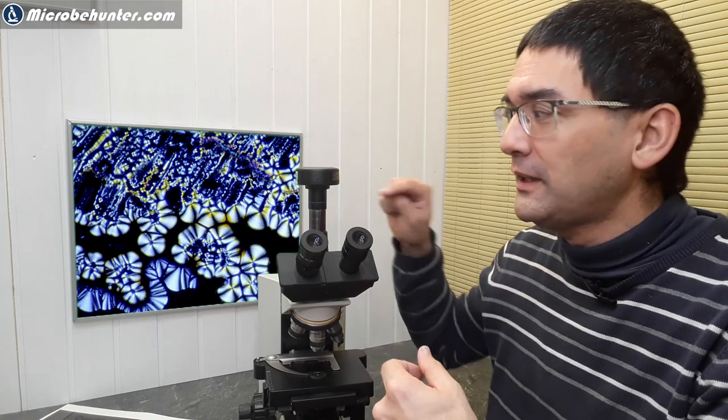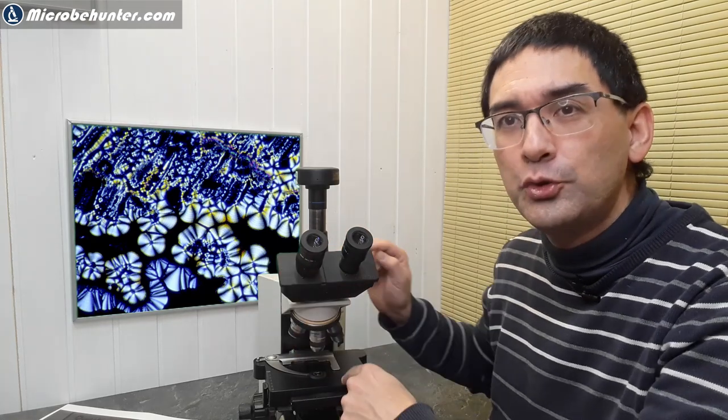So the question is, what magnification do I have now on the camera? Now the 0.3 or 0.5 magnification here is necessary, so that the image that is projected from the objective is resized in such a way that it fits nicely on the sensor.